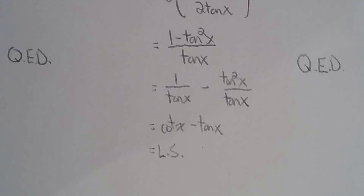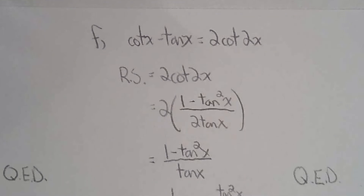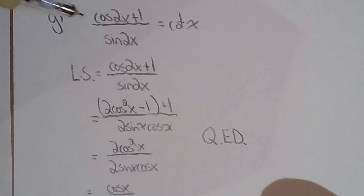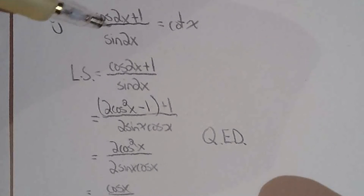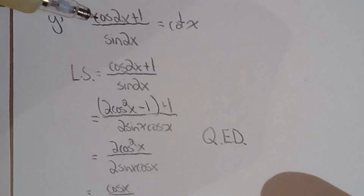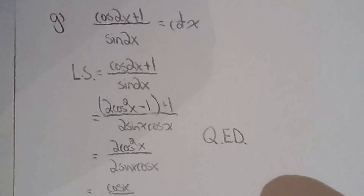The hardest part of 15f is just taking the reciprocal of the double angle formula for tan. For 15g — which is actually the half-angle formula for cotangent — apply the double angle formula for cosine, the double angle formula for sine, simplify, and you're done.